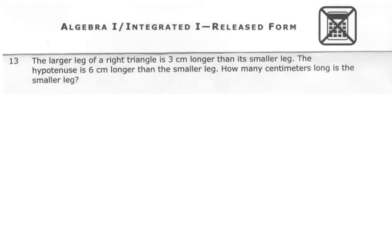As I'm reading this question, I notice that everything is in relation to that smaller leg. We're comparing the large leg to it and the hypotenuse to it. If you recall, the hypotenuse is the longest side of a right triangle. I'm going to go ahead and draw a picture. I know it's a right triangle. I know that there's a large leg and a smaller leg, so I know it's not isosceles.